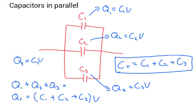And if we just substitute this in here, the voltages will cancel and we're left with the formula that the total capacitance is equal to C1 plus C2 plus C3.